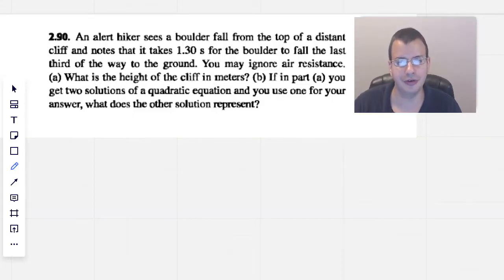An alert hiker sees a boulder fall from the top of a distant cliff and notices that it takes 1.3 seconds for the boulder to fall the last third of the way to the ground. You may ignore air resistance. What is the height of the cliff in meters?